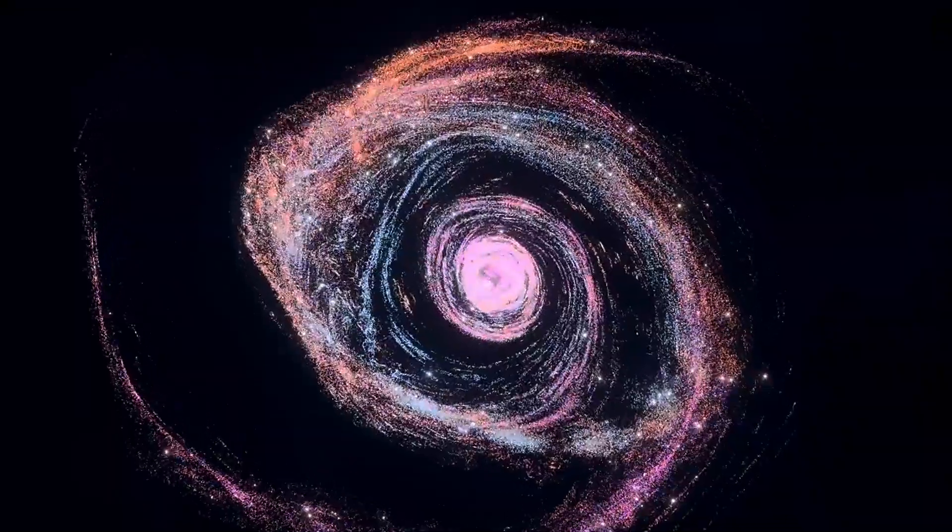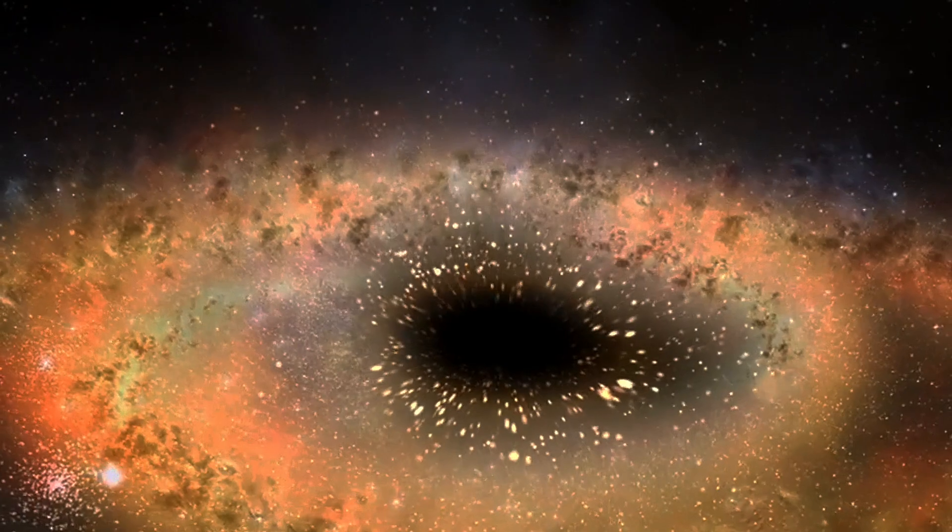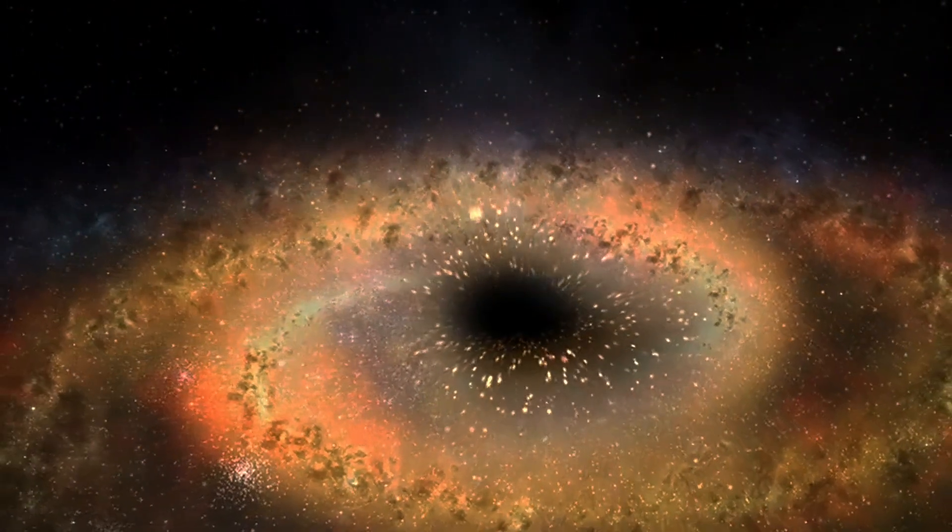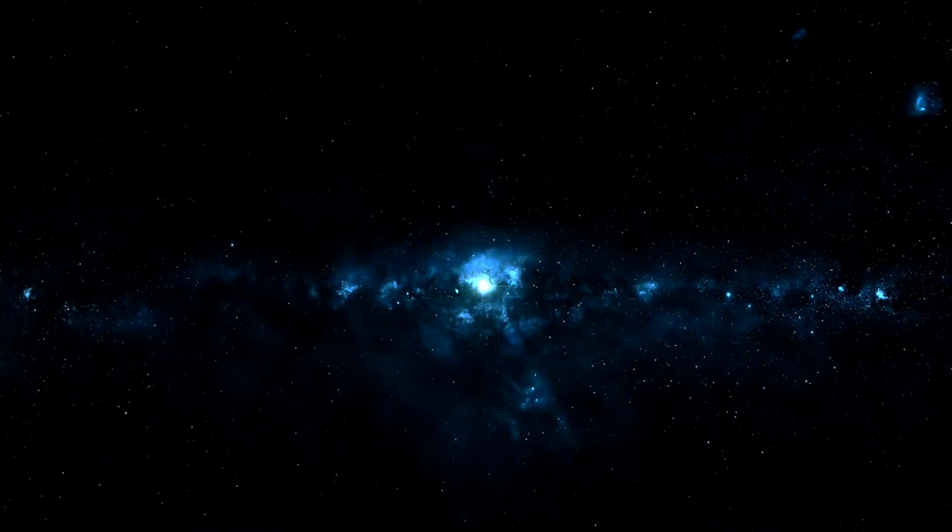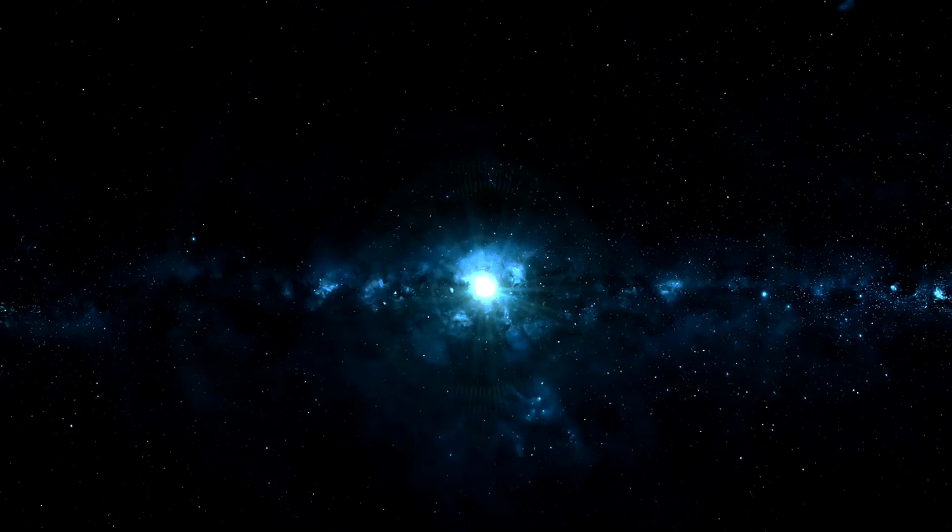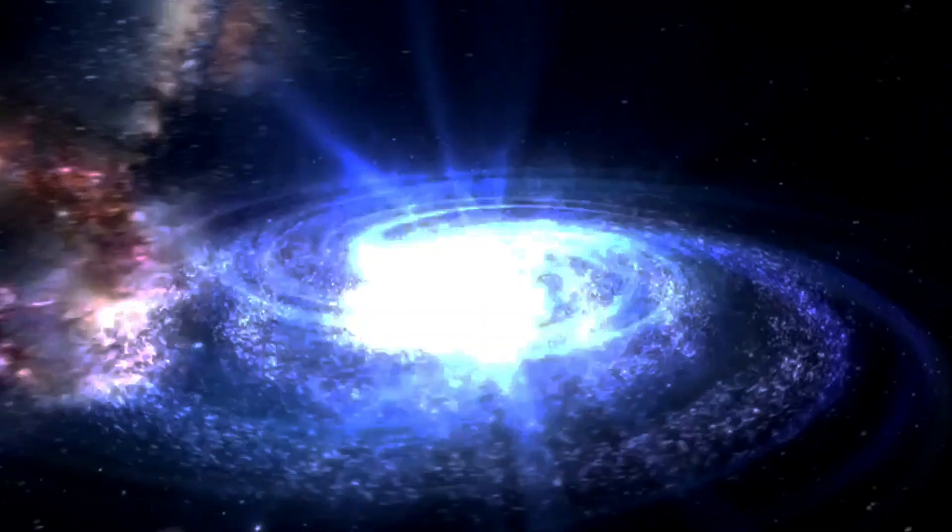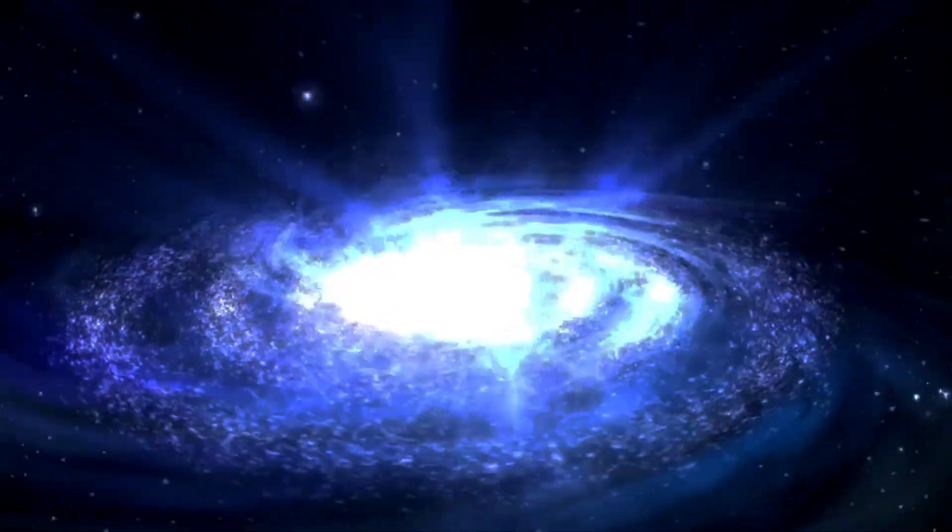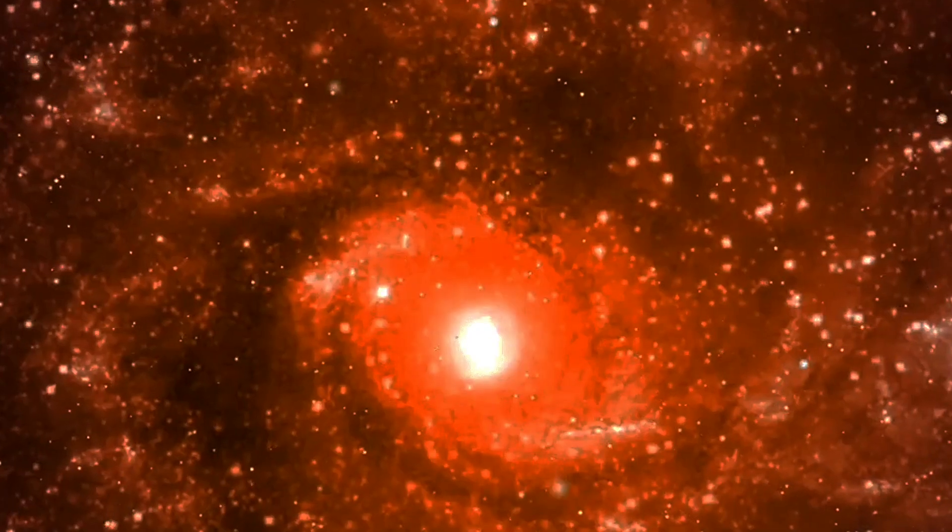The reason for this goes all the way back to the hot Big Bang itself. It turns out that, sure, on average, the universe is filled with the same amount of all forms of energy, including normal matter and dark matter everywhere. But the truth is that the universe was born seeded with tiny imperfections, over-dense and under-dense regions, at the level of just a few parts per 100,000 everywhere.